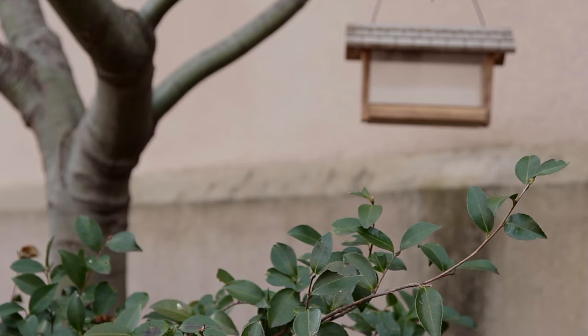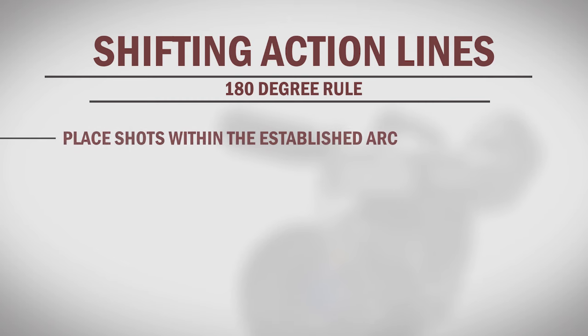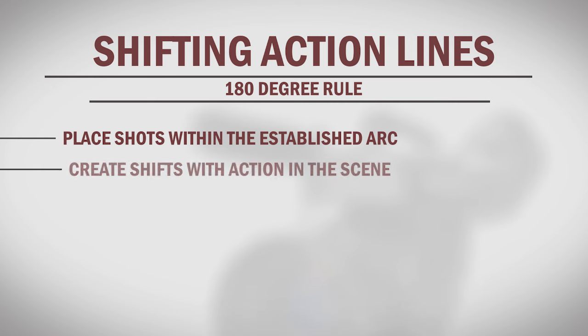A third way to establish a new line is to use a cutaway shot. In this example, we might use a shot of the surrounding landscape, followed by a shot taken on the opposing side of the action line. Keep in mind that each time you establish a new action line, you are now locked into that 180 Degree Arc until the line shifts with your subject's action, camera movement, or specific camera shots.